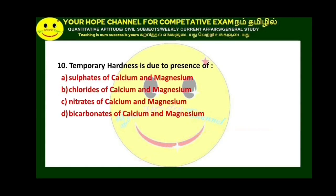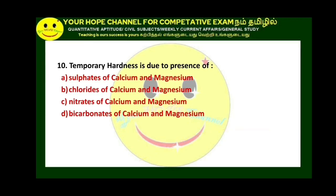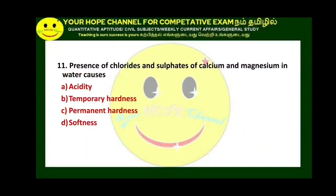Next question: temporary hardness is due to the presence of bicarbonates of calcium and magnesium. Carbonates and bicarbonates of calcium and magnesium cause temporary hardness. Next question on permanent hardness: chlorides, sulfides, and nitrates of calcium and magnesium cause permanent hardness. The answer is option C.